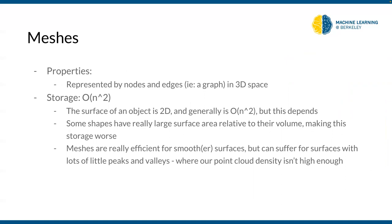Some properties of meshes: it's a graph — points connected by edges with faces between them, an extension of a graph in 3D space. Storage is O(n²) typically, since the surface of an object is two-dimensional. Meshes work well for smooth surfaces, but high-frequency details with lots of peaks and valleys are not well-represented — you'd need very high resolution and therefore high storage. Meshes are also generally difficult to work with in machine learning settings because we don't have the best techniques for graphs yet.